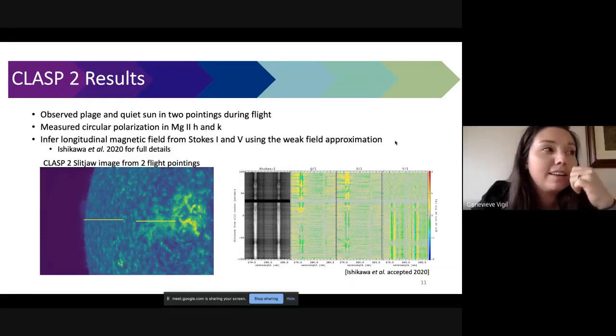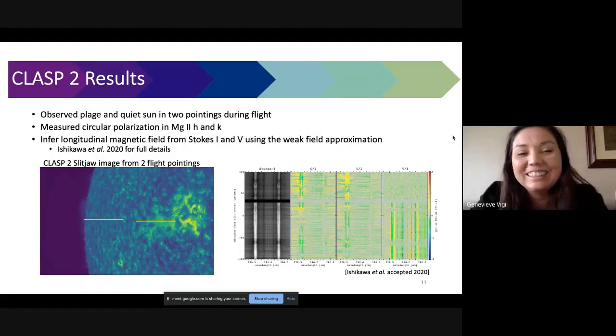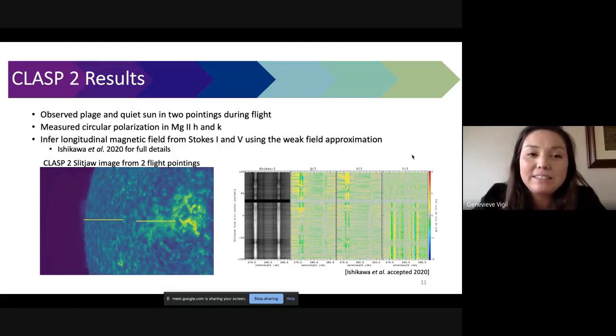Laurel adds: The H line in linear polarization in the Hanle effect is inherently unpolarizable, so we weren't expecting to see linear polarization in that line. Thank you Laurel. I didn't know that you were on this talk. Laurel was intimately involved in all of these projects too so I'm really happy to hear her voice.